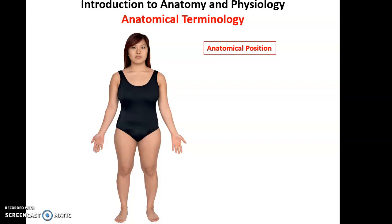In the anatomical position, the person is facing forward, feet and legs approximately shoulder width apart, feet flat on the floor, and arms to the sides with the palms facing forward — toward the front. Whenever we talk about the relative position of structures in the body, we always assume the person is in the anatomical position.